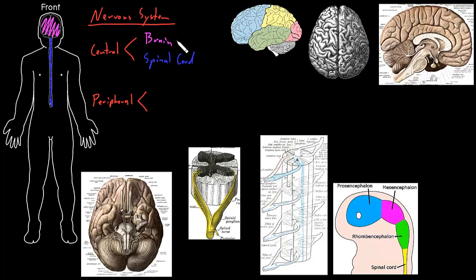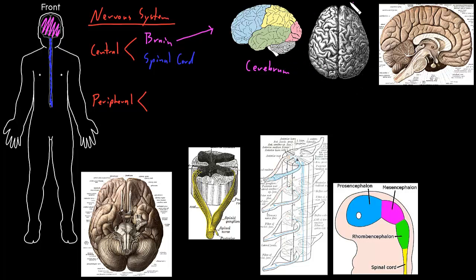The brain is divided into a bunch of different parts. Here we're looking at the brain from the left side. All of this part on top is called the cerebrum — the biggest part of the brain. If we look down from the top, the cerebrum is divided into a left and a right half, and we call those the cerebral hemispheres, like half a sphere.